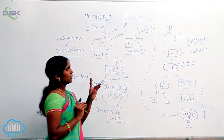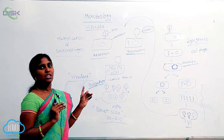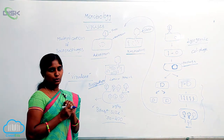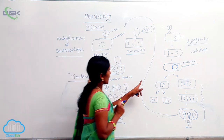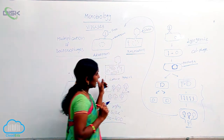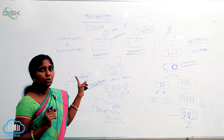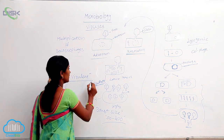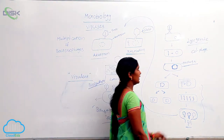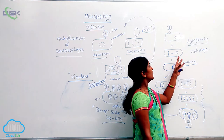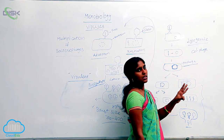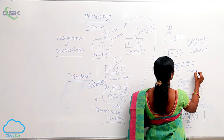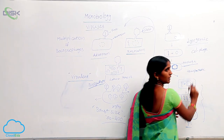So these two mechanisms — these two cycles — are involved in the multiplication of bacterial phages. The phages involved in the lytic cycle are called virulent phages. But the phages involved in the lysogenic cycle are called temperate phages.